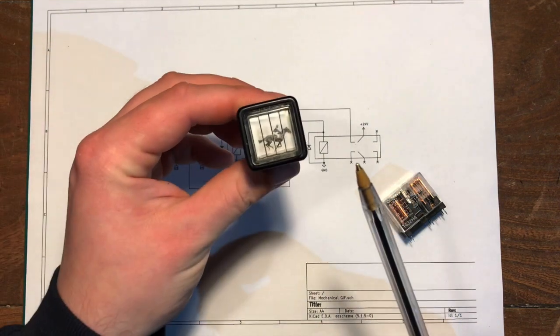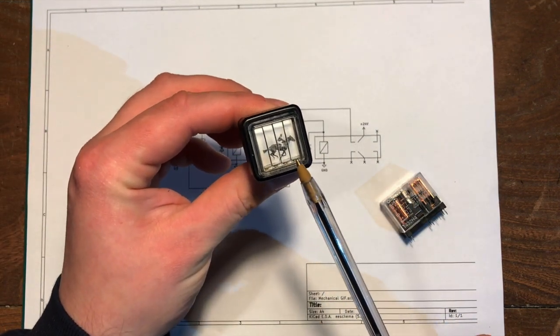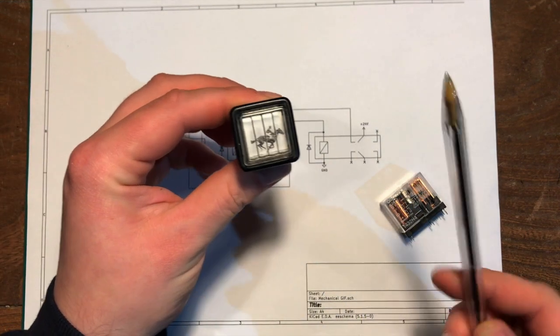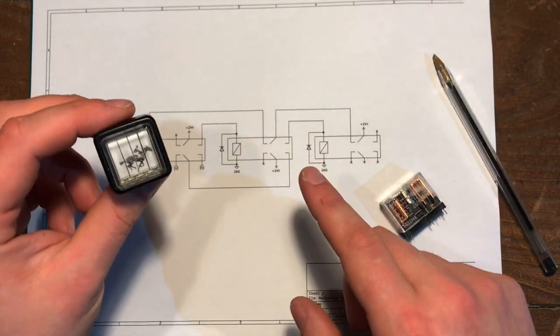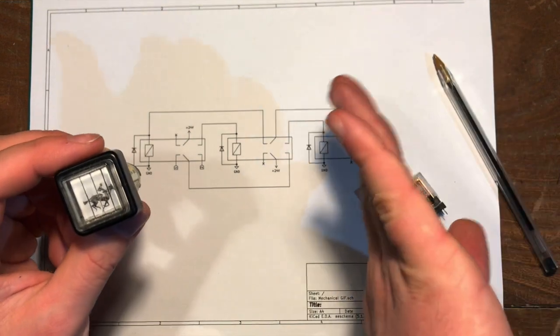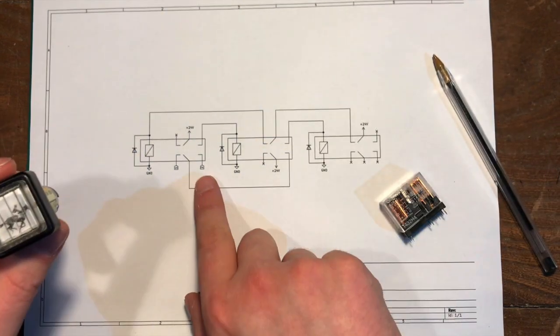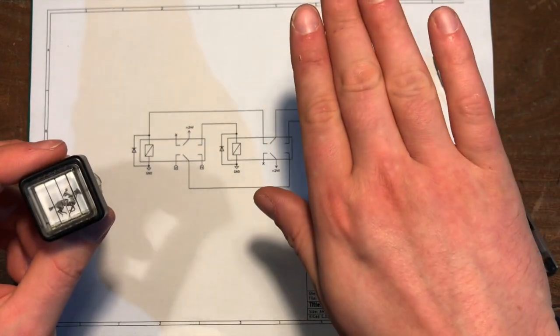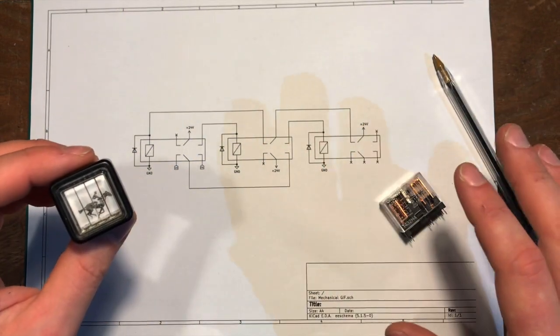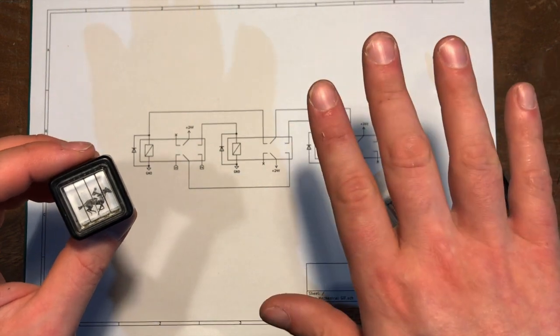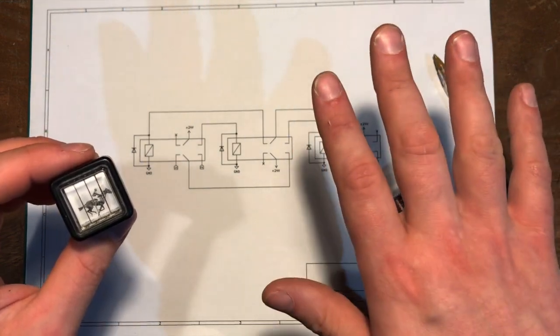And what we want it to achieve is to switch between the three different positions of this indicator. The indicator rests in its middle position and if you put power to pin one it will flip to the left hand side and if you put power to pin two it will flip to the right hand side. There's a spring inside the display so if you remove the power it will just spring back to its middle resting position.